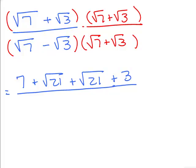For the bottom, these are conjugates, giving a squared minus b squared: square root of 7 times square root of 7 is 7, minus square root of 3 times square root of 3 is 3, so I get 4. Now in the top, I can add 7 and 3 to get 10, and square root of 21 plus square root of 21 — those are like terms, just like x plus x equals 2x — so this is 2 square roots of 21. That gives us 10 plus 2 square roots of 21 over 4.